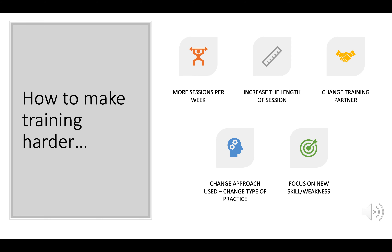They may also decide to increase the length of their session — for example, moving from 45 minutes to an hour. They may change their training partner if they have reached a fitness or skill level greater than that of their current partner. They may change the approaches they are using, choosing harder ones with more pressure that are more similar to game situations. Alternatively, if there has been a huge improvement, they may choose to pick a new skill, focus, or weakness altogether and change their training program.